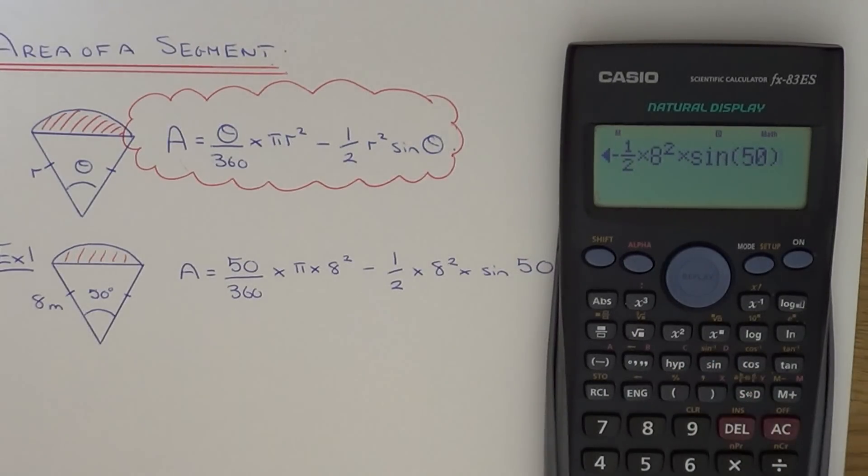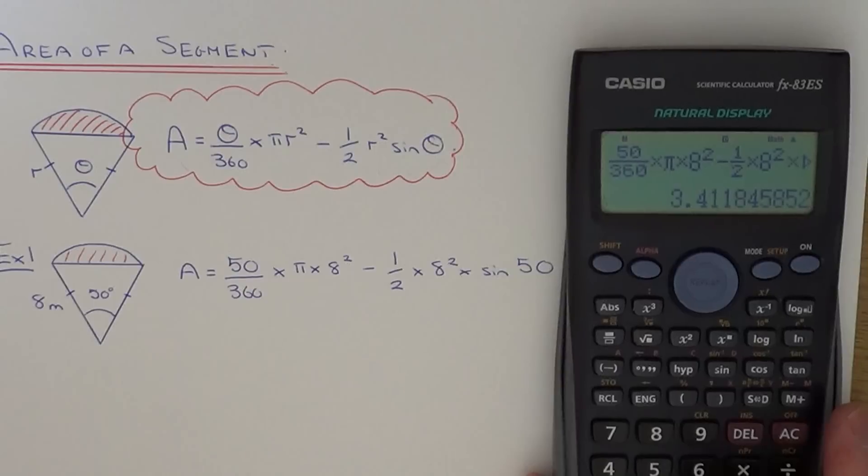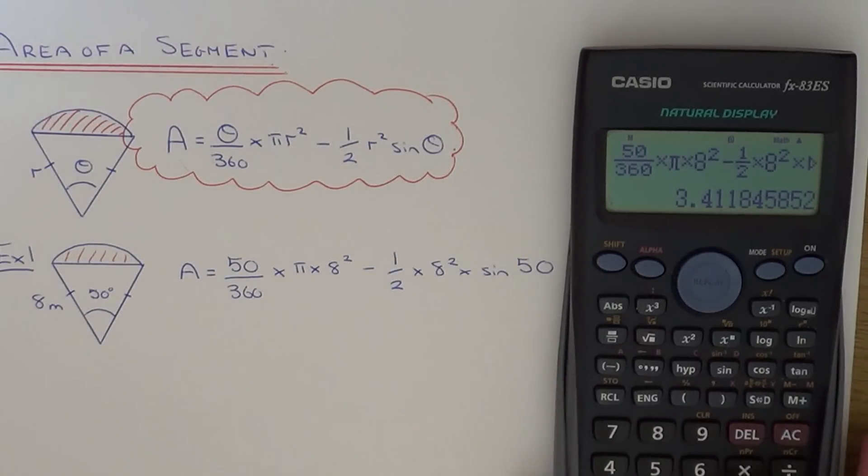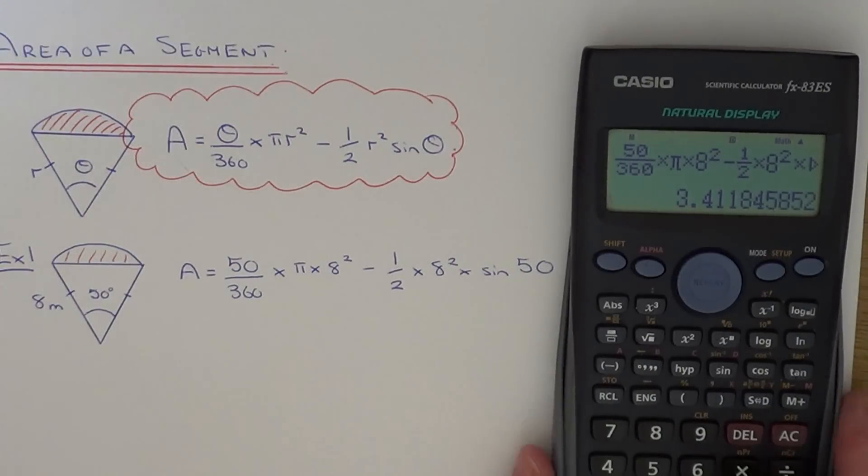So hit the equals. So if we round that off to three significant figures that will be 3.41. So the area of our segment is 3.41 meters squared.